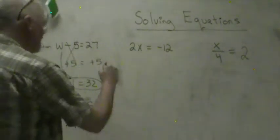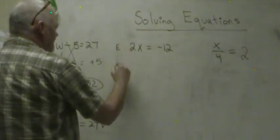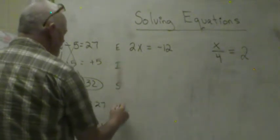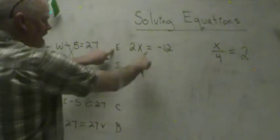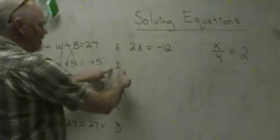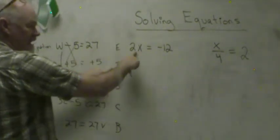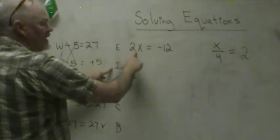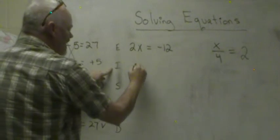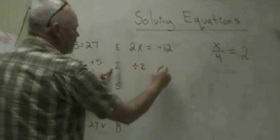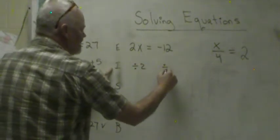I'm going to put my letters up here. E. I. S. C. B. Equation. We have an equation. We're going to do the inverse of whatever is happening. Right now it's multiplying. We're going to do the inverse of multiplying which is dividing. So we're going to divide by 2 on both sides.